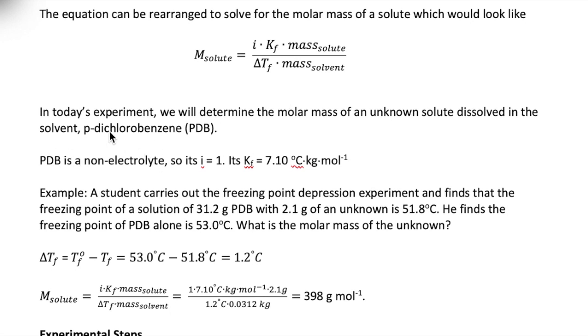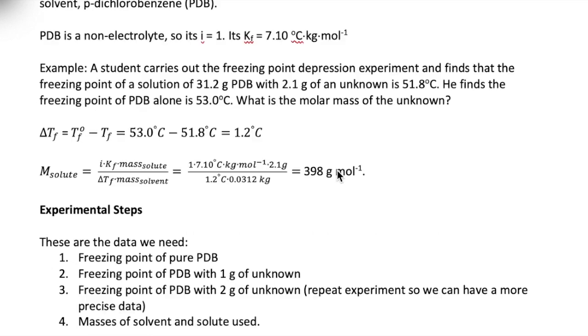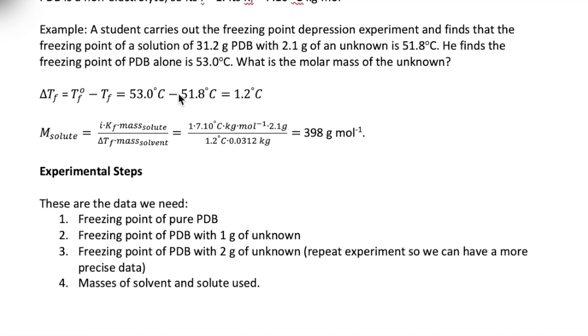We will use a solvent called para-dichlorobenzene, or PDB for short. PDB is a non-electrolyte, so its Van't Hoff factor is 1 and its Kf is 7.1 degrees Celsius per molal of solute. Let's see how we can use this equation to help us calculate the molar mass of a solute.